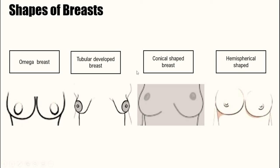Then we have conical shaped breasts — as the name suggests, they are like cones, with less fullness and puffy nipples, which is an important feature of the cone shape. Hemisphere shaped breasts have a fuller upper part filled with breast tissue. This breast shape sits firmly on the chest and fits very well in the upper part of a bra cup.